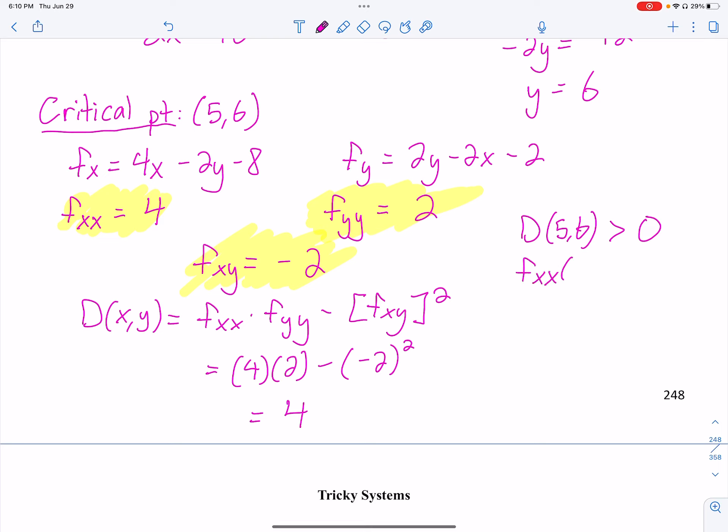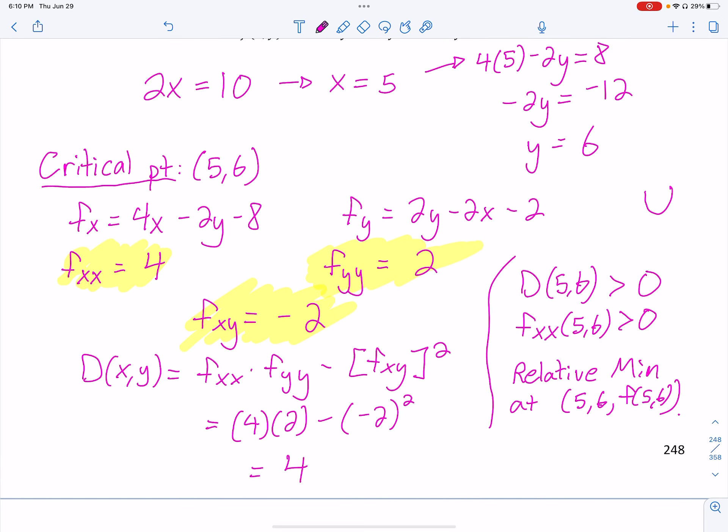Then we look at fxx and we get 4. So that's greater than 0. So I'm thinking that has positive concavity. So that is a minimum. So it's a relative minimum at 5, 6. And then I'm going to be lazy here. f of 5, 6, that would be my z component. All I got to do is plug 5 and 6 into my function. And that will give me that. So there we go. We found that on the surface at the point 5, 6, whatever the z is, f of 5, 6, there will be a relative minimum. So we'd have like a valley there at 5, 6.